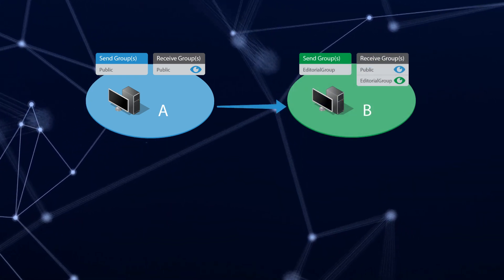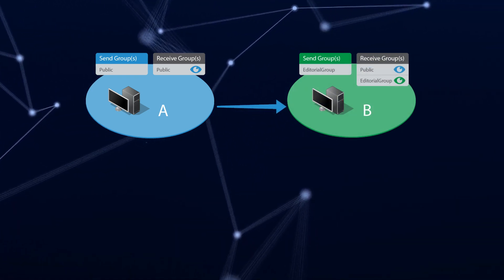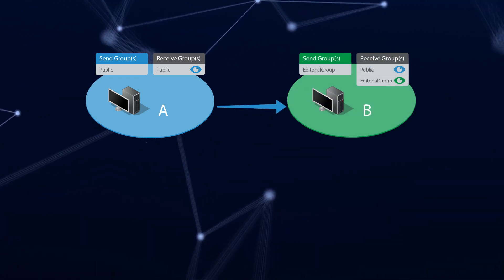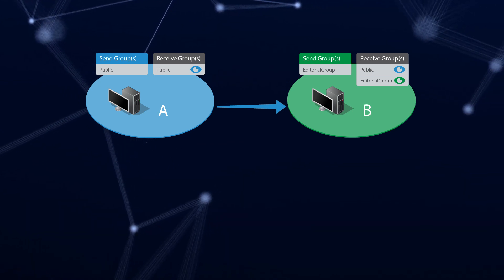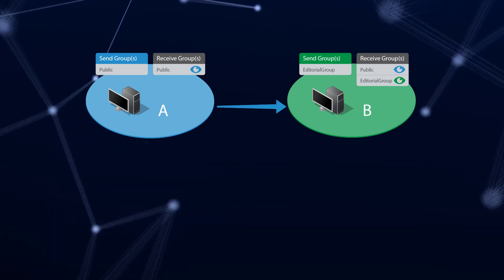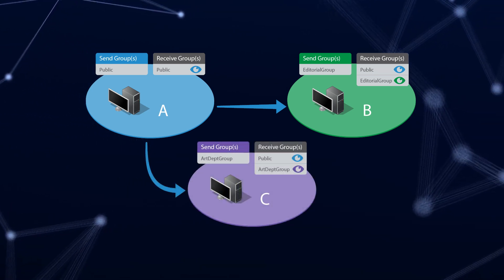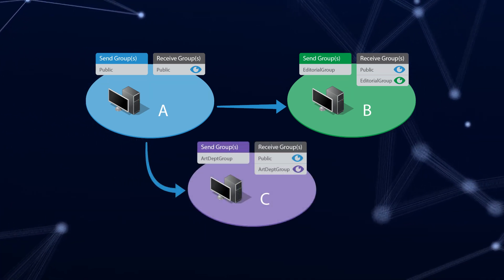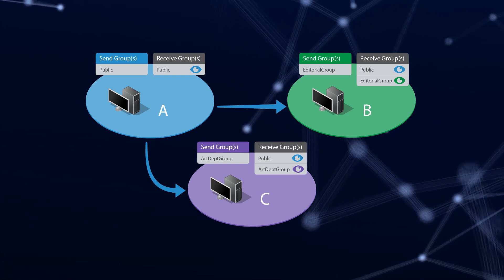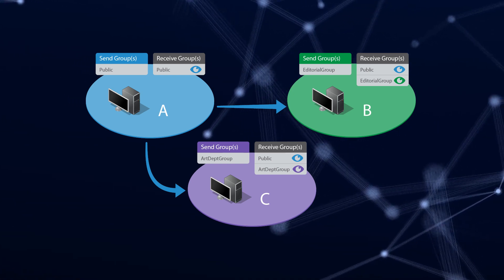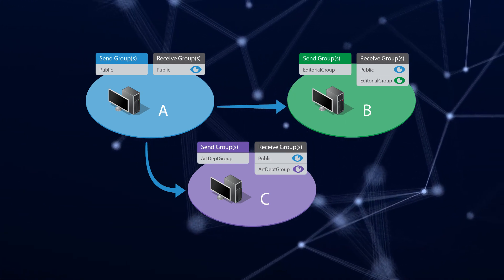Computer B has its send group set as Editorial Group, and its receive groups set to Public and Editorial Group. Computer C has its send group as Art Department Group, and receive group set to Public and Art Department Group.